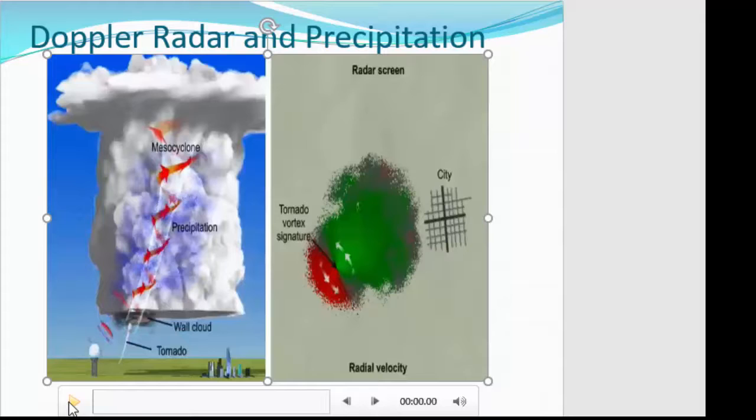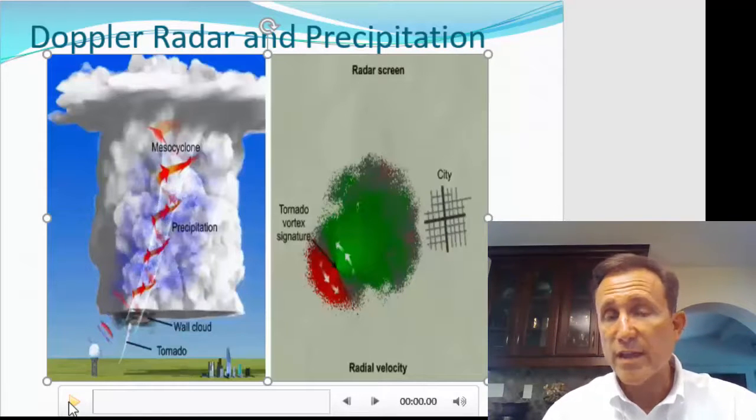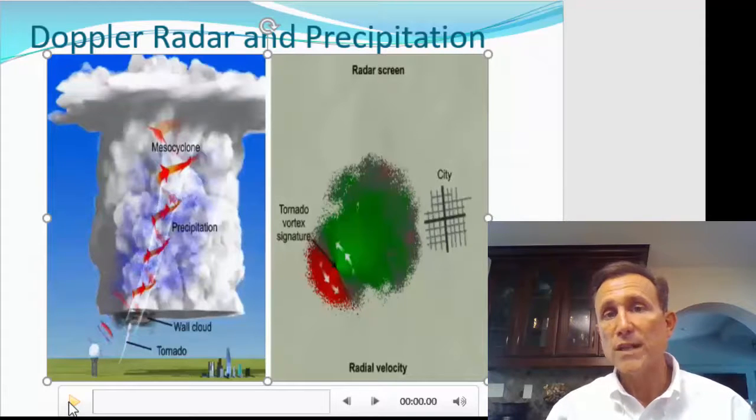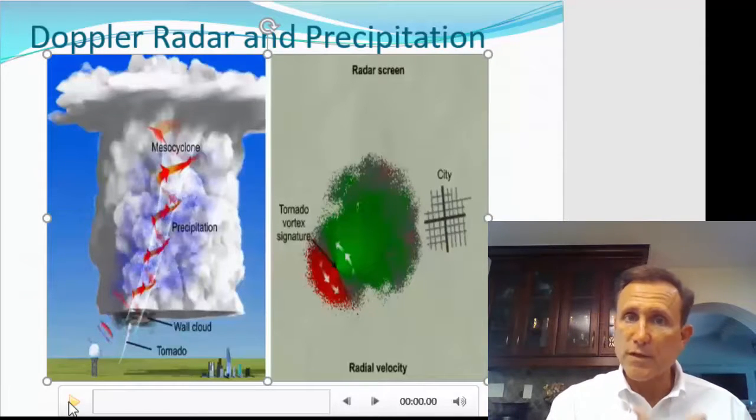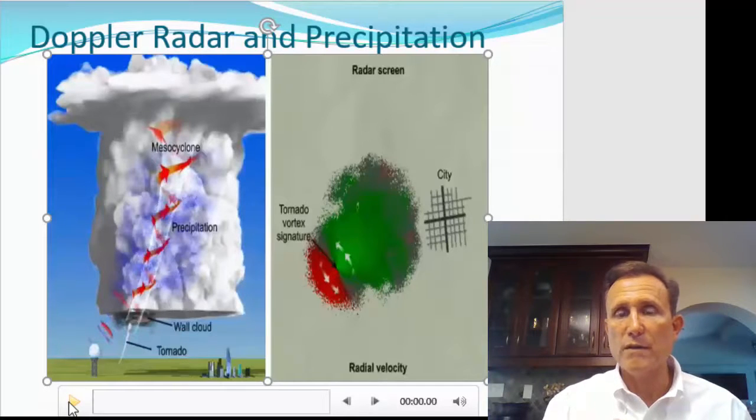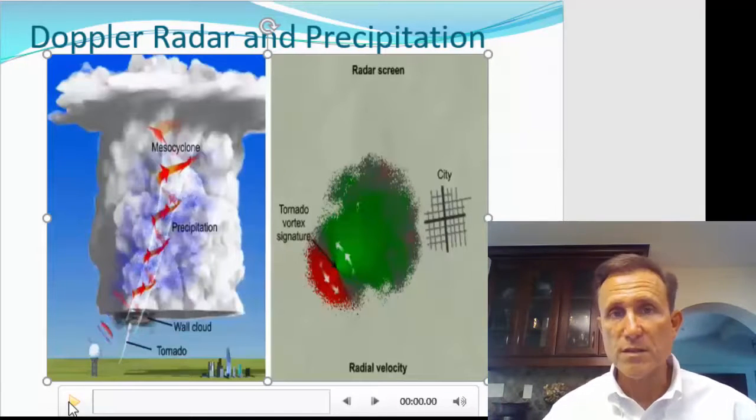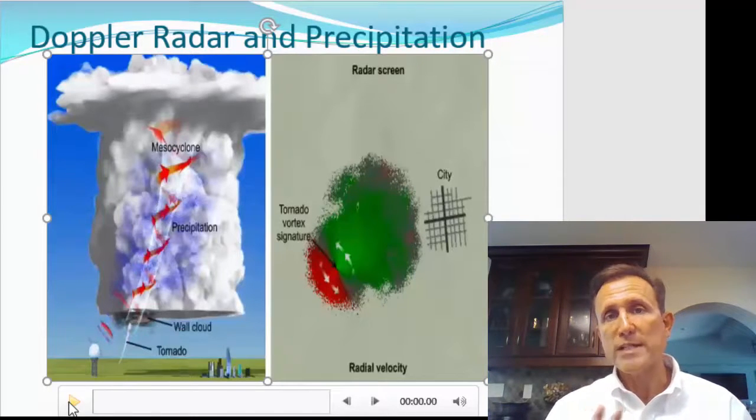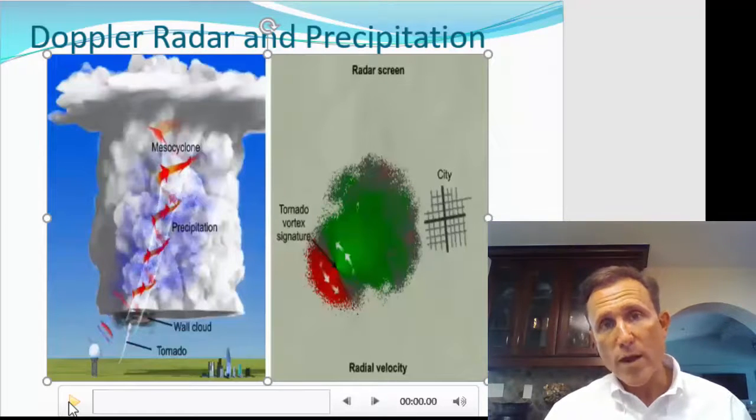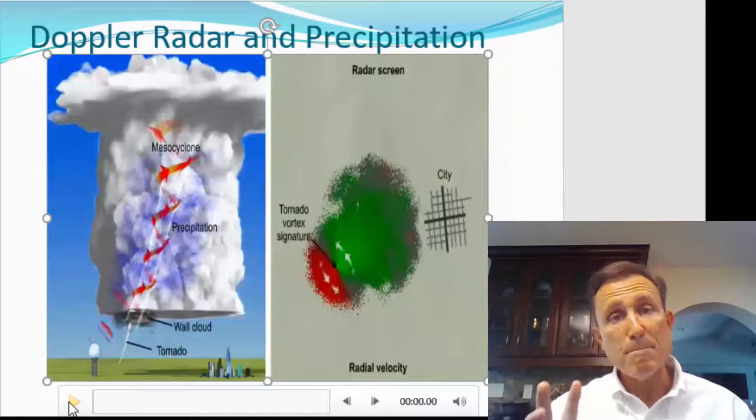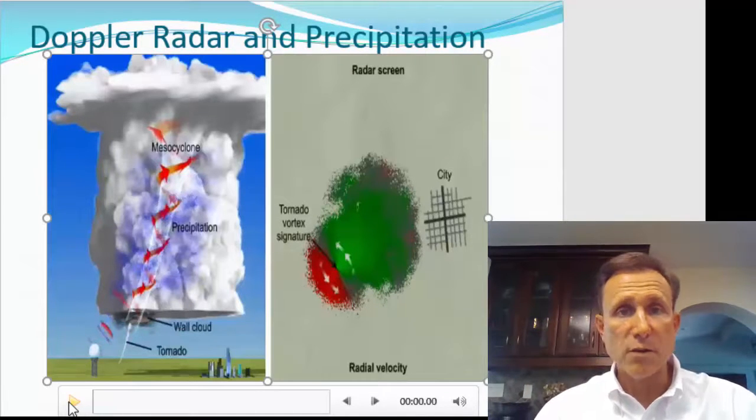So Doppler radar is effective at showing us the precipitation amounts, the intensity. That's with reflectivity. That can also show us the direction that the storms are moving and how fast they're moving. But when we switch it to velocity, that's when we can see which way the winds are moving within the structure of the storm. And we know that a storm with winds moving away and toward the radar site is a storm that's rotating. And a rotating thunderstorm is the type of thunderstorm, a mesocyclone, that can generate severe weather, including tornadoes.